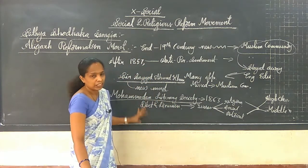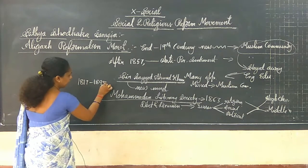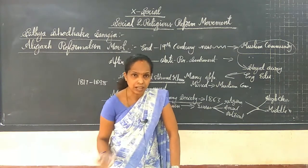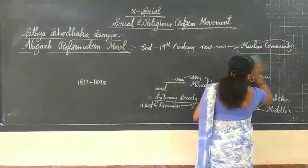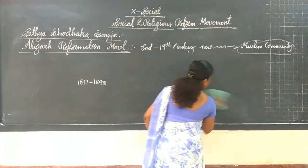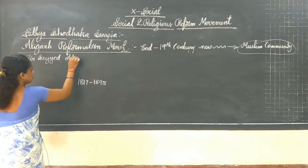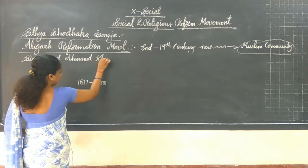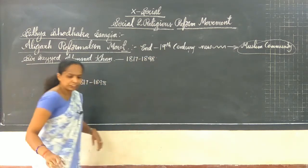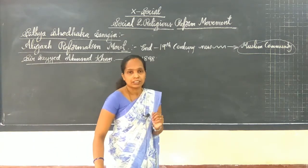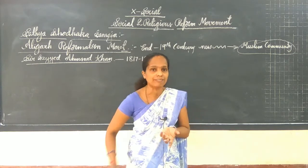Whenever they participated, they realized the importance of English education. It was participated by higher class and middle class people, and when they participated and discussion took place, they realized the importance when they discussed in the English language. So they realized the importance of English education. Sir Syed Ahmad Khan lived from 1870 to 1898. During that time, he was saying that the Quran is the only authoritative book.